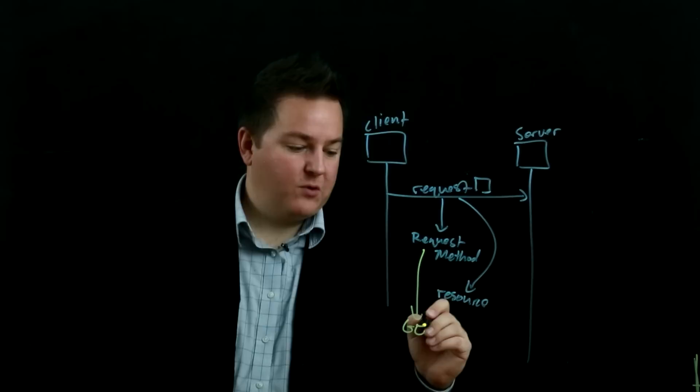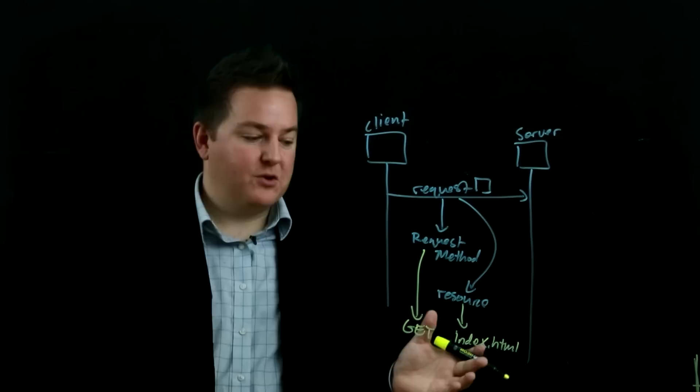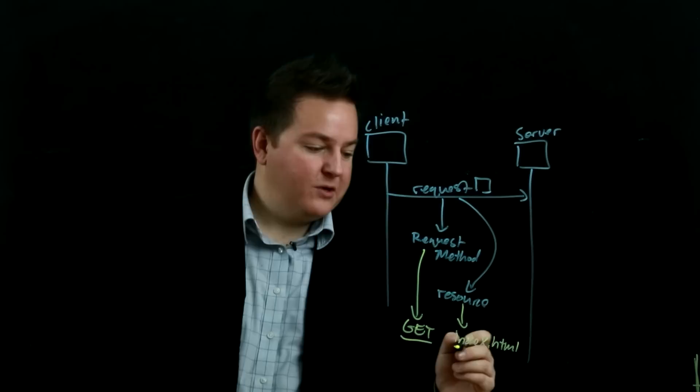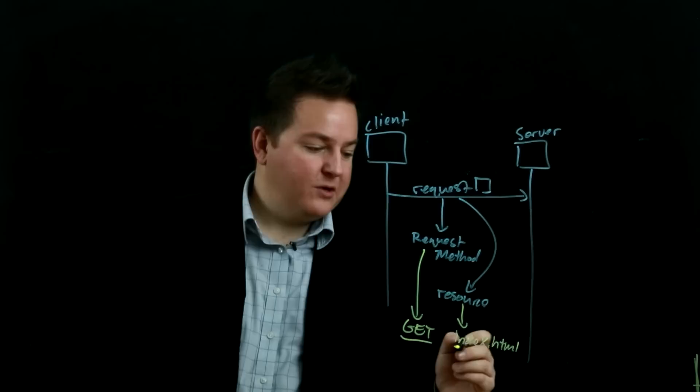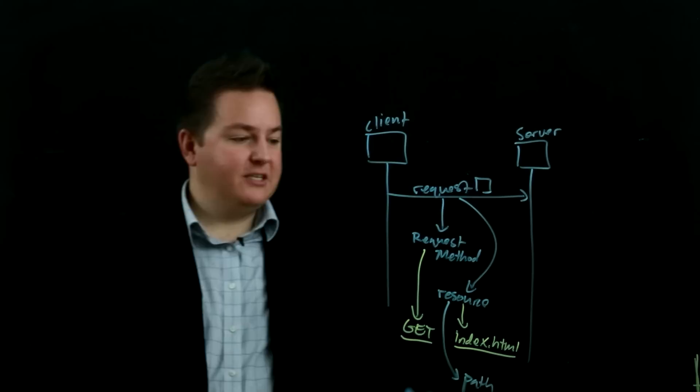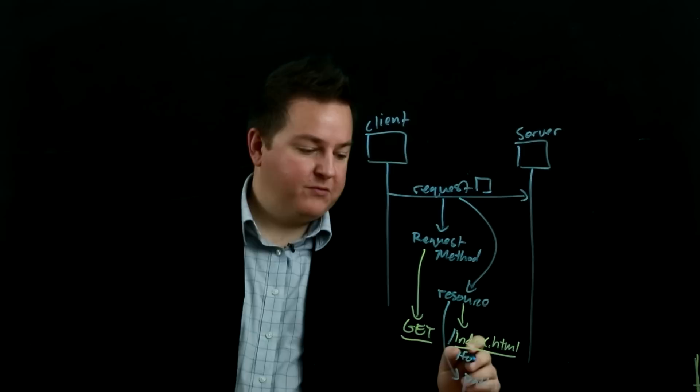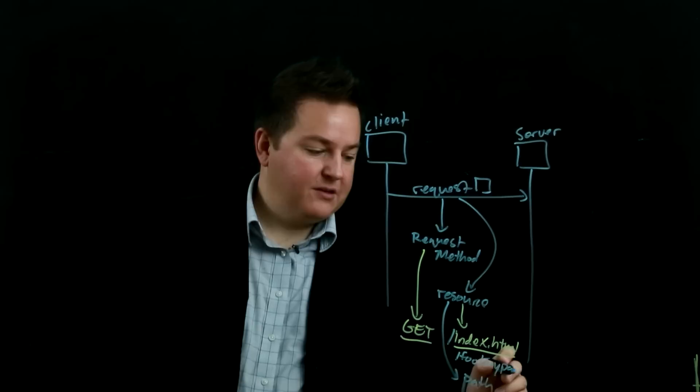And the resource is usually some web page like index.html, which is usually the core web page at a website when you go to that address. So the GET is the request method and the resource is the index.html. And the resource is typically specified as a path to a resource on the server. So you'll see something like GET /index.html or /foo/mypage or some other resource that you would like to access. And here again, it's a request method and then a path to a resource.